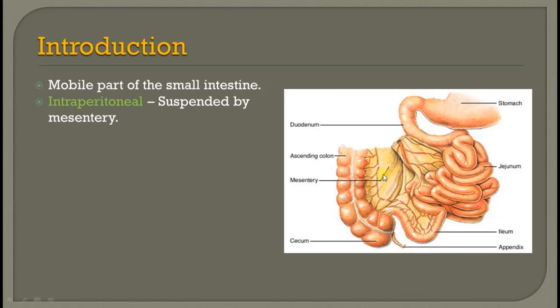The total length of the coils of the intestine is 6 meters or 20 feet in length, of which the proximal or upper two-fifths is by the jejunum and the distal three-fifths is by the ileum.